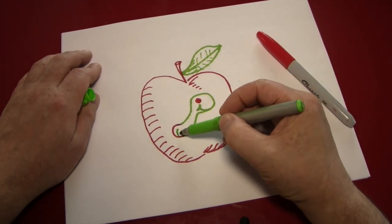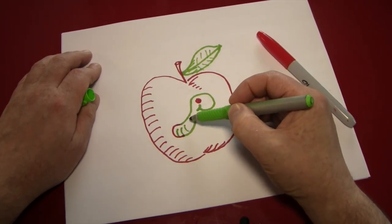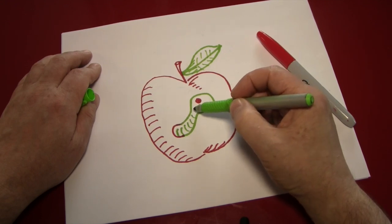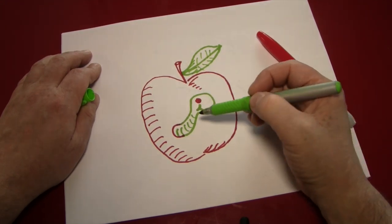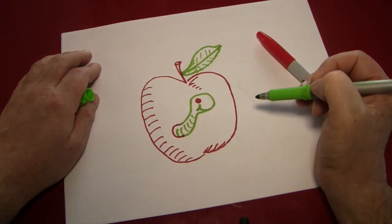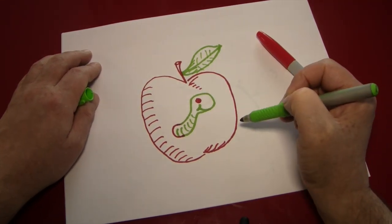And some rings on our friend the worm. They don't have to go all the way up to his head. They could just look like a little sweater for him. Because maybe it's cold in the apple.